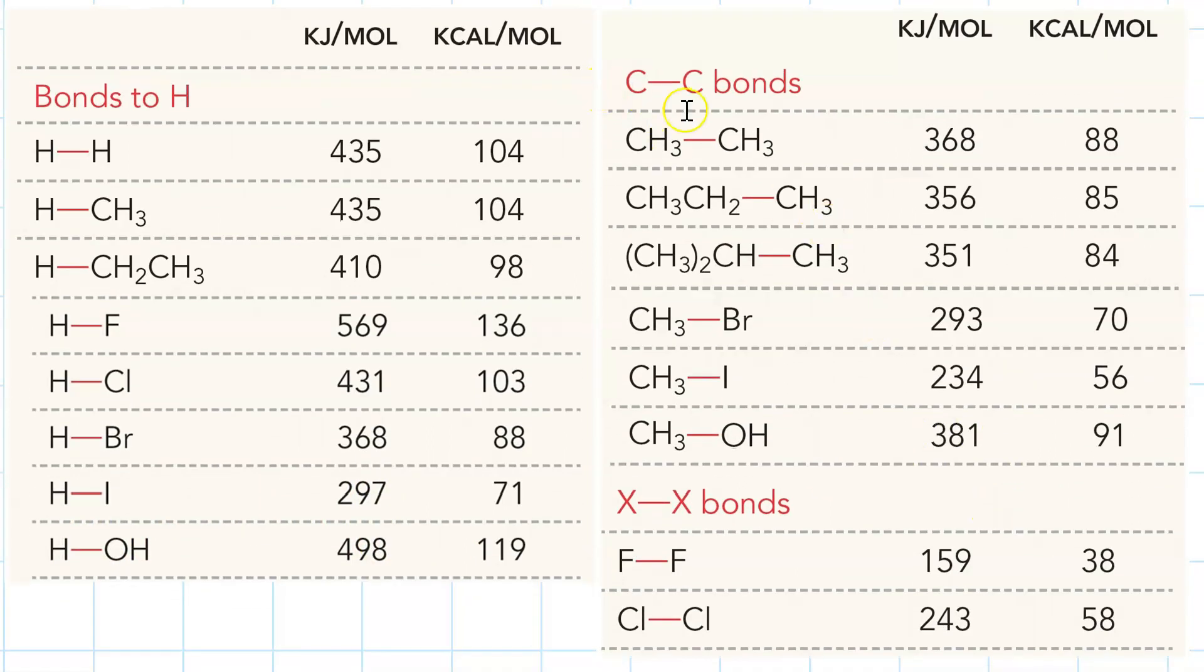Talking about breaking carbon-carbon bonds, breaking the C-C bond in ethane costs 368 kilojoules per mole. Breaking one in propane costs less, 356. In 2-methylpropane that costs 351. Breaking a CH₃-Br bond is 293, CH₃-I is 234, but carbon to oxygen is 381.